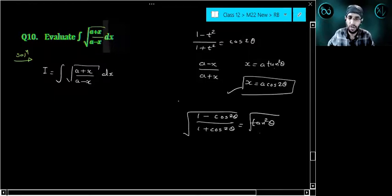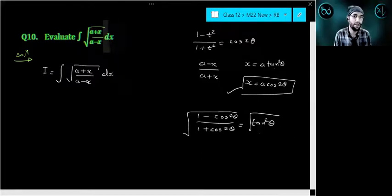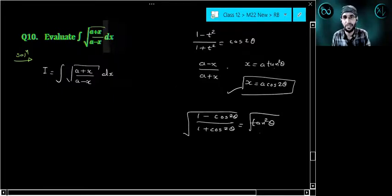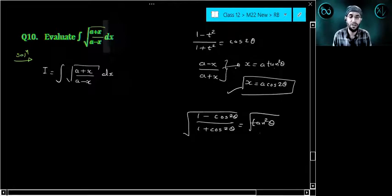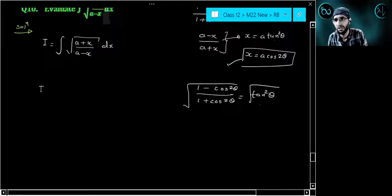When you get the answer to x equal to a cos 2 theta, are you getting my point everyone? Then we could have used this right, x equal to a tan square theta directly. So I is equal to integration, let us take let x is equal to a cos 2 theta.